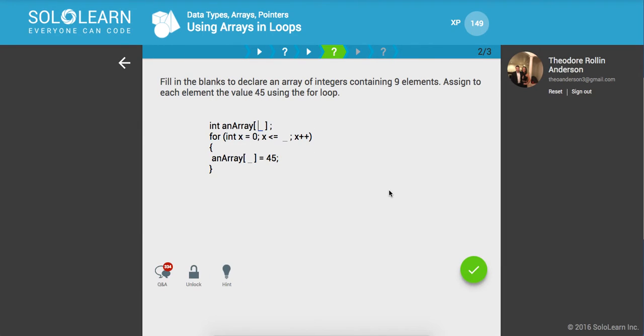So, fill in the blanks to declare an array of integers containing 9 elements. Assign to each element the value 45 using the for loop. We want to create 9 spaces right there, allocate 9 spaces of memory. Or 9, just 9 positions. And we want to go up until it's less than 9. And we'll say an array of x is equal to 45. So, let's go ahead and run that code. It looks like I messed it up.